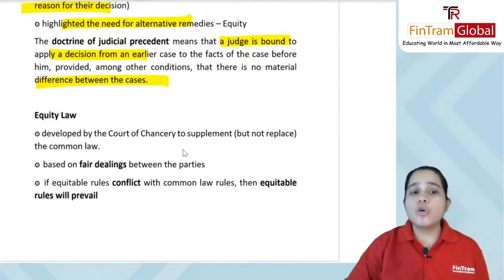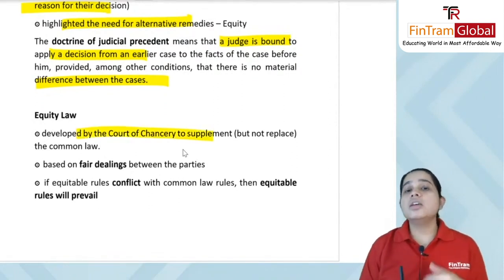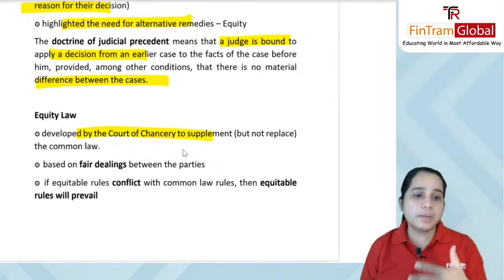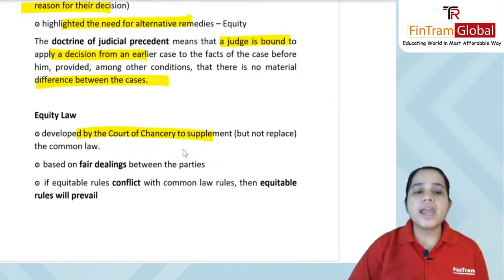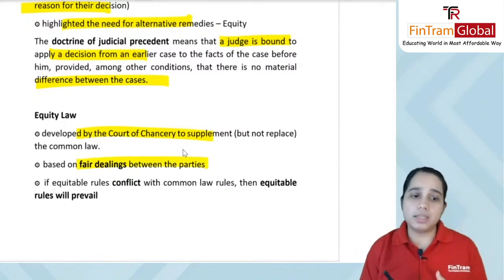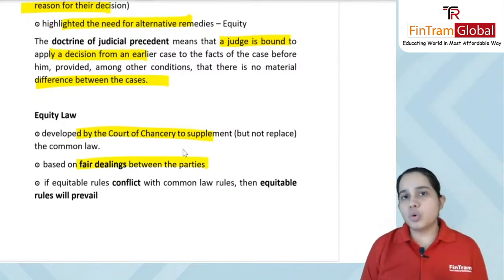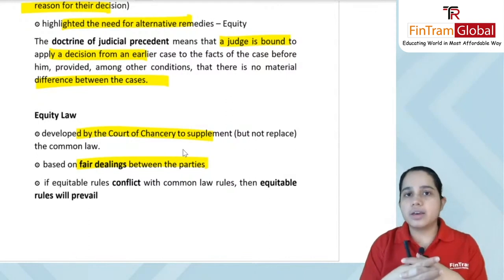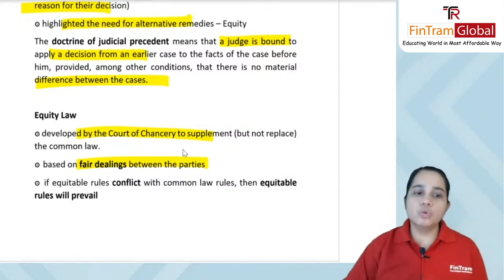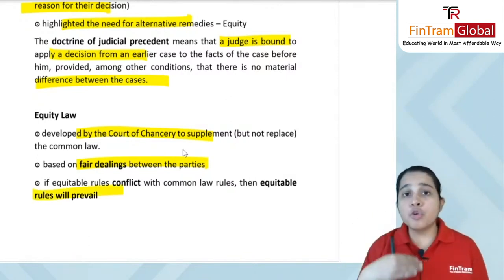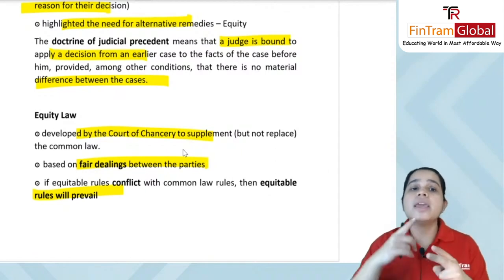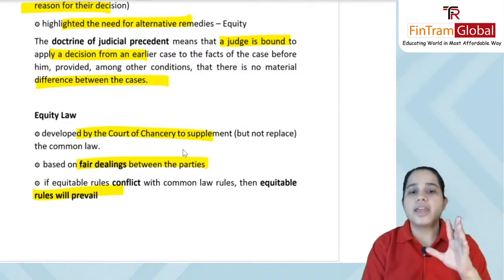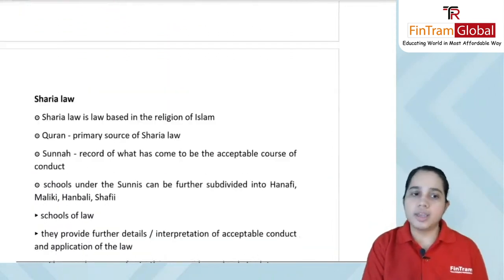The doctrine of judicial precedent means that a judge is bound to apply a decision from an earlier case to the facts before him, provided there is no material difference between the cases — for example, if an earlier murder case and a current case have no material differences. Equity law was developed by the Court of Chancery to supplement — not replace — common law, and was based on fair dealings between parties. If equitable rules conflict with common law rules, equitable rules prevail.